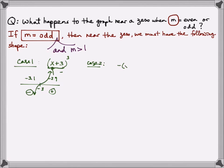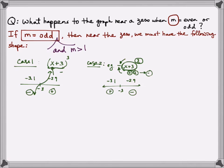On the other hand, it could also look like -(x + 3)³. A test point to the right gives a positive quantity, cubed still positive, but the negative sign makes it negative overall. A test point to the left gives negative, cubed is still negative, but the negative sign in front makes it positive overall. So the graph near x = -3 looks like negative x cubed — still crossing the x-axis. In summary, when multiplicity is odd, the graph crosses the x-axis and follows the shape of y = x³ or y = -x³. This holds for any odd power: 5, 7, 9, and so on.